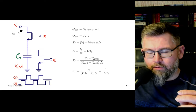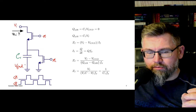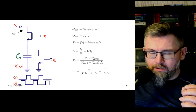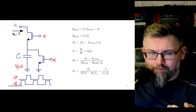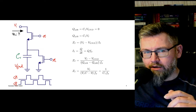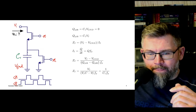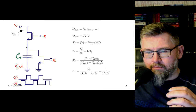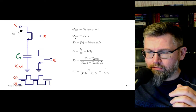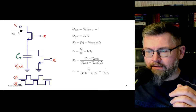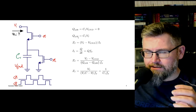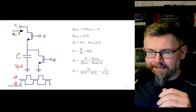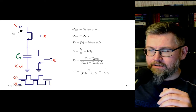As soon as we open the PHI1 switch, we start to charge the capacitor to VI voltage. This takes some time because the switch will have some resistance, so there's an exponential settling behavior. But at the end of PHI1, the voltage on the capacitor will be equal to VI. The charge on the capacitor at the end of PHI1 is C1 times VI.